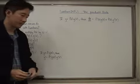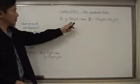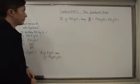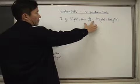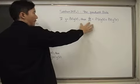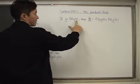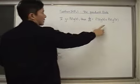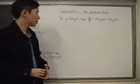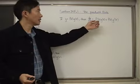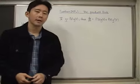Today in section 21f.1 we're looking at the product rule. This is what it says: if you have two functions multiplied together, then the derivative dy/dx, which is the same as y prime, equals f prime of x times g of x, plus f of x times g prime of x. The main thing you need to determine is what f of x and g of x are, find their derivatives, and apply the formula.